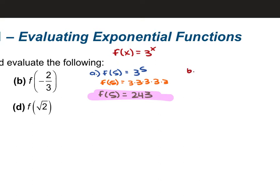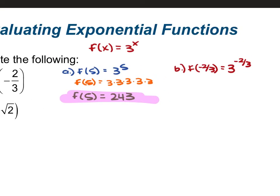For b, we are doing f of negative 2 thirds. So this means that we're going to have 3 to the power of negative 2 thirds. We cannot have a negative power, so we're going to take the reciprocal of the term that it's attached to in order to turn that power into a positive. So f of negative 2 thirds is equal to 1 over 3 to the power of 2 thirds. We took the reciprocal of 3 — that's 1 over 3 — and that 3 is still being raised to the power of 2 thirds, but now it's positive.